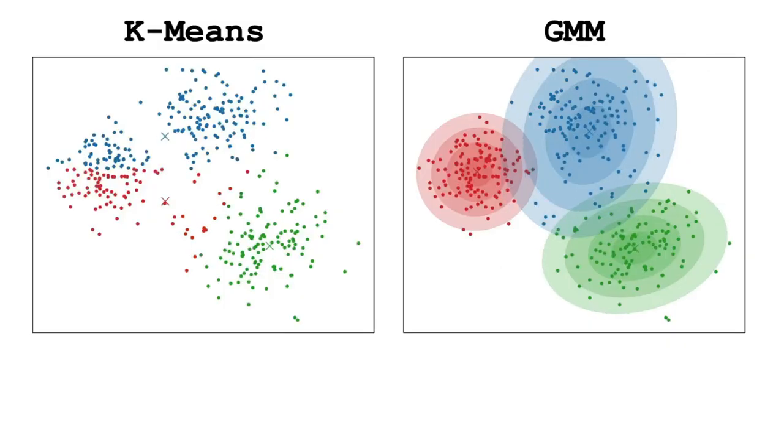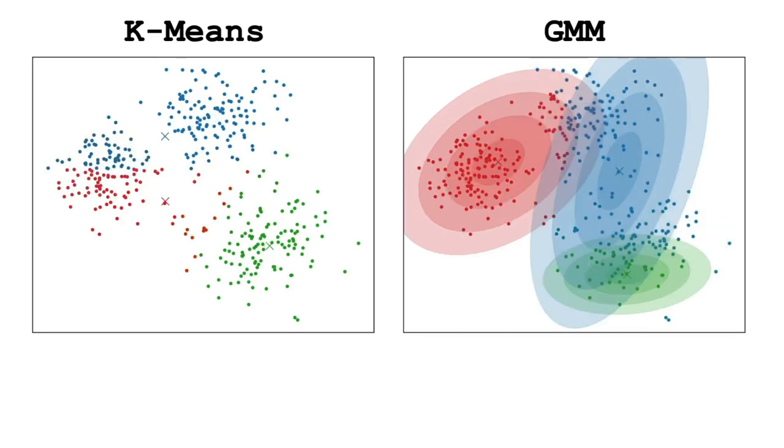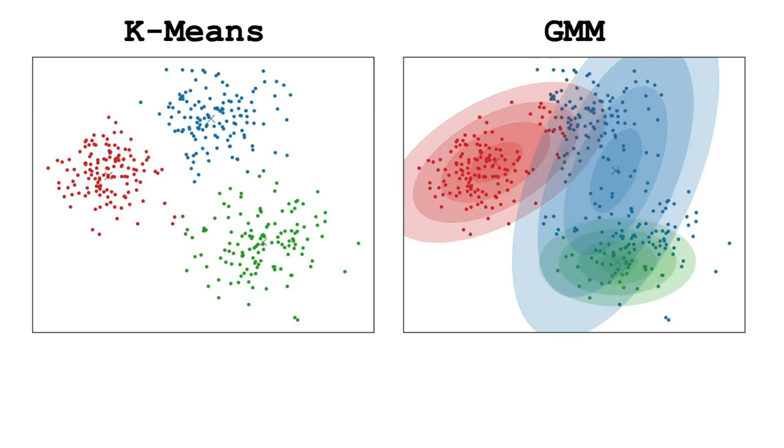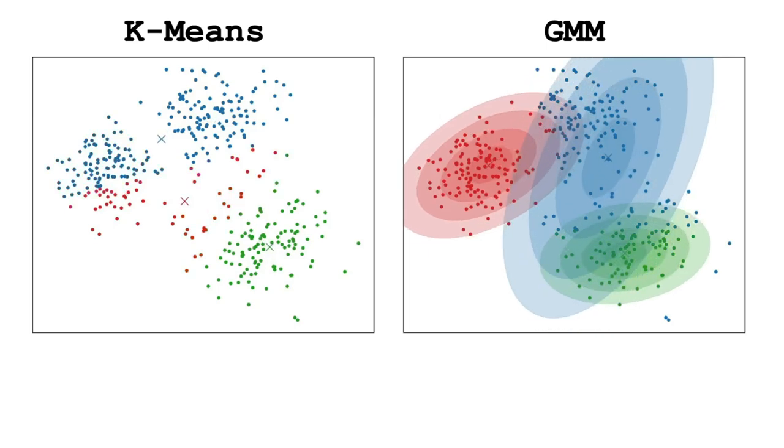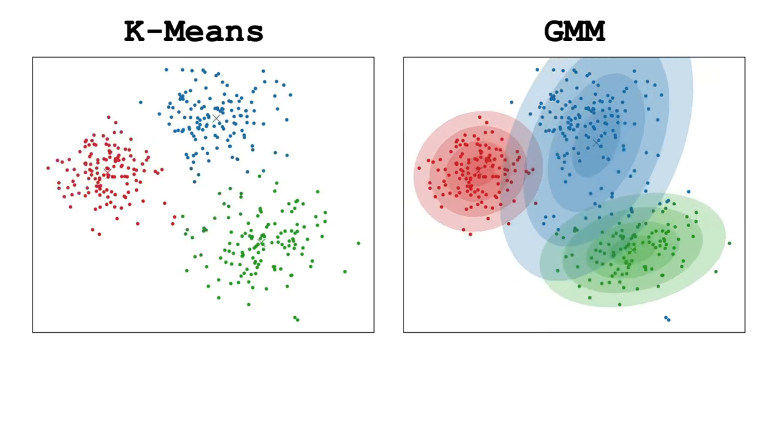Before we delve into the details of GMMs, let's compare them to K-means clustering which many of you may be familiar with. Both are clustering algorithms but one important distinction is that K-means assigns each data point to the cluster of its nearest neighbors whereas GMMs introduce a probabilistic approach by modeling data points as a mixture of multiple Gaussian distributions.